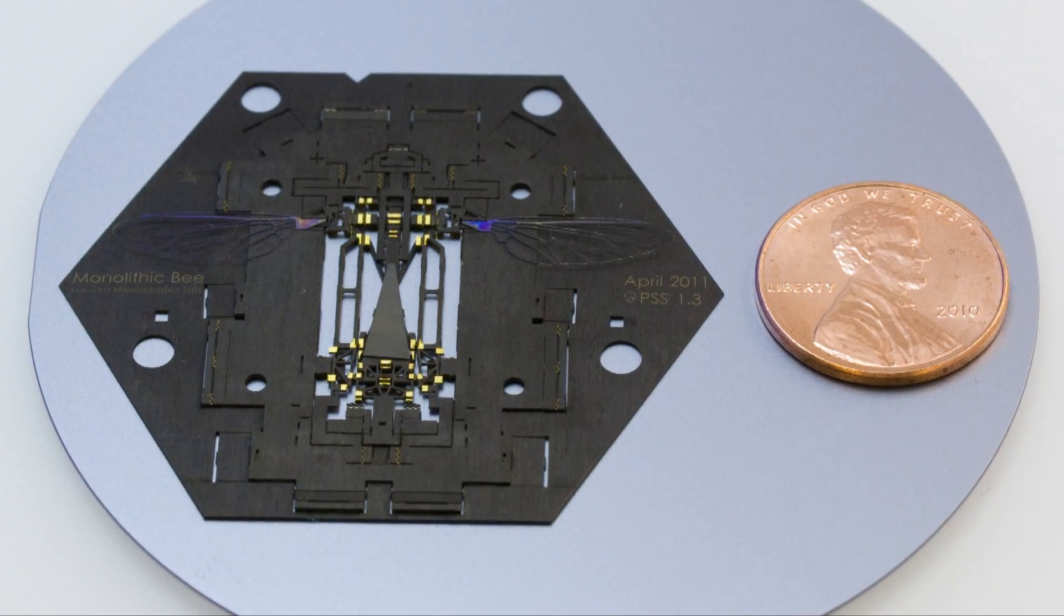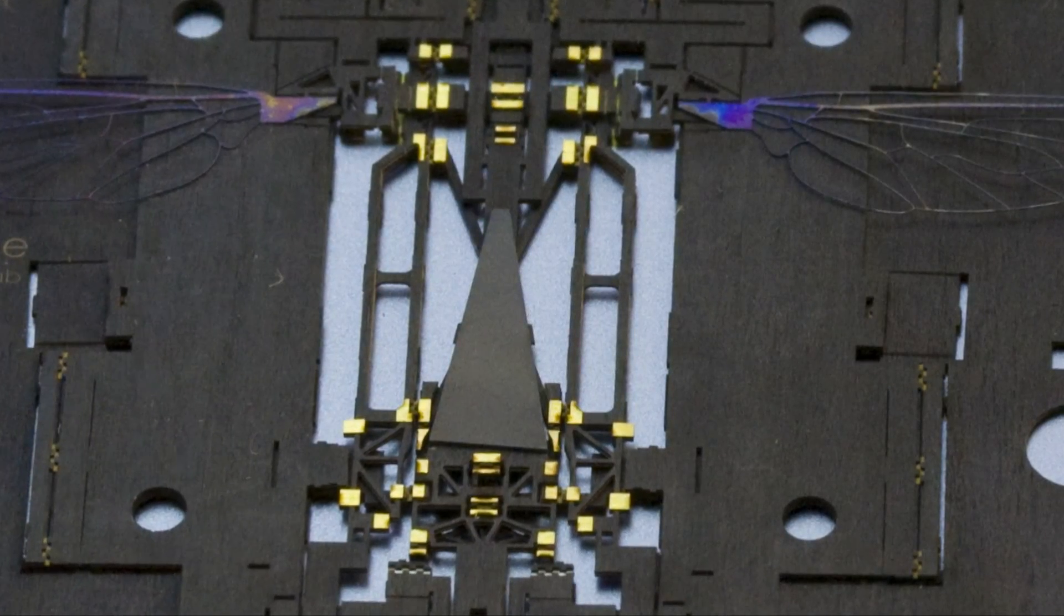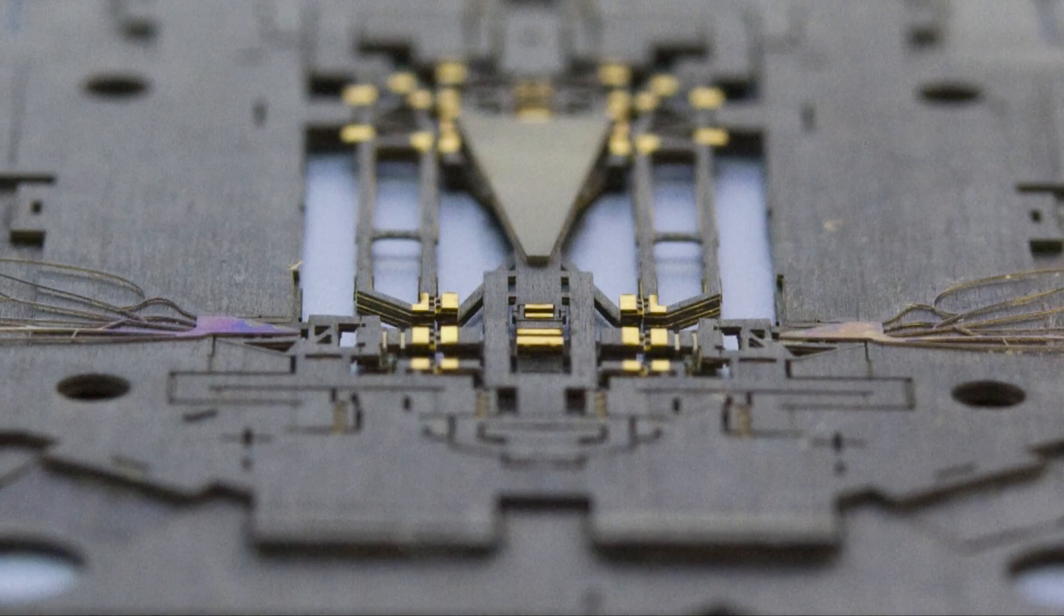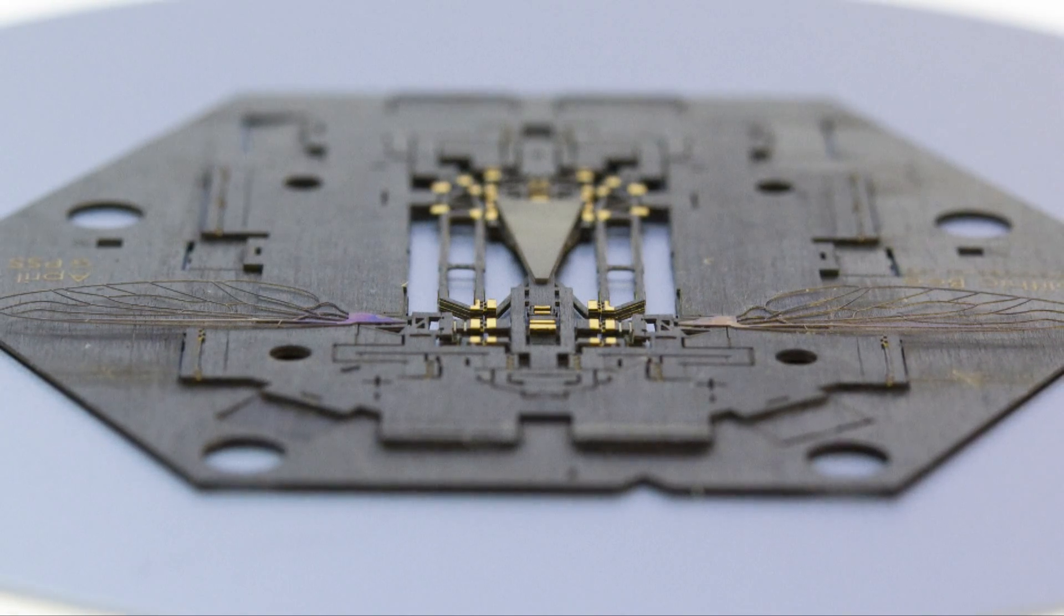Viewing the actual device, the majority of the structure is dark carbon fiber. The central piezoelectric ceramic trapezoid, the purple titanium wings, and the golden brass pads are also visible. This flat laminate relies on pop-up book folding to achieve a three-dimensional structure.